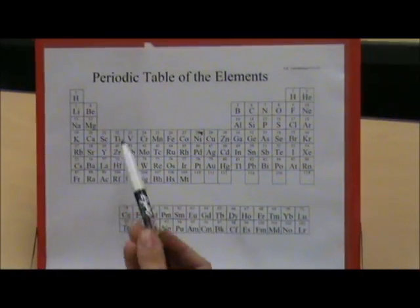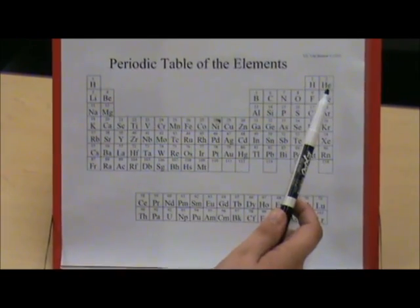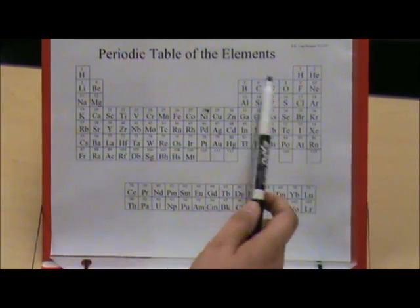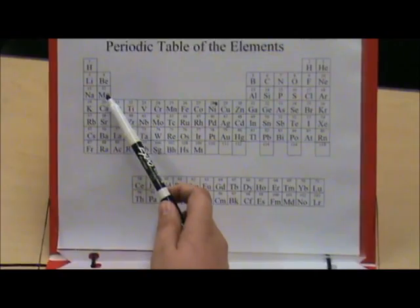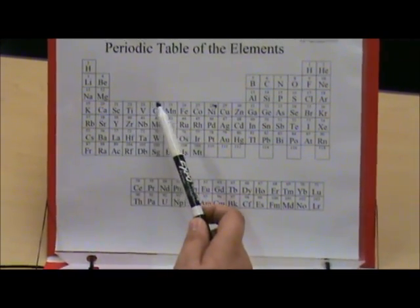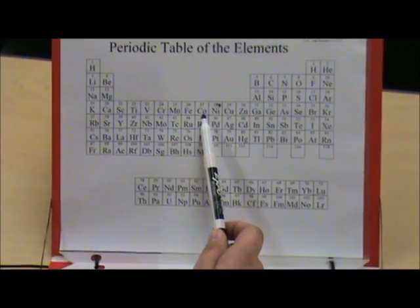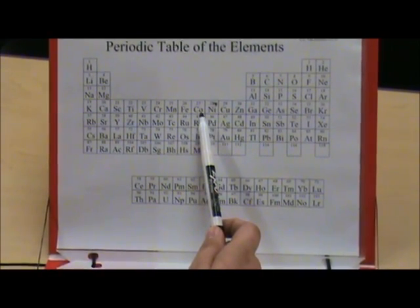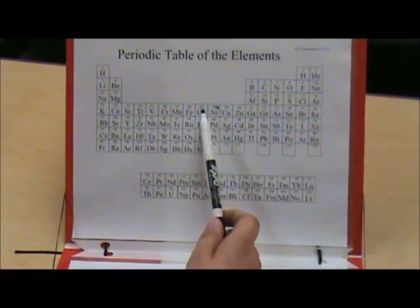All right. 1s2, 2s2, 2p6, 3s2, 3p6, 4s2, 3d7. All right. I have it this time. It's cobalt. Yes. That's a miss.